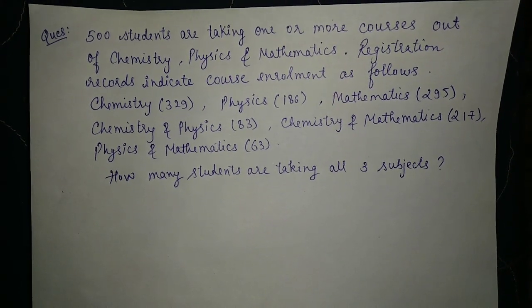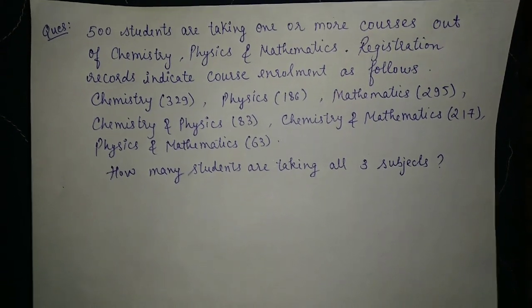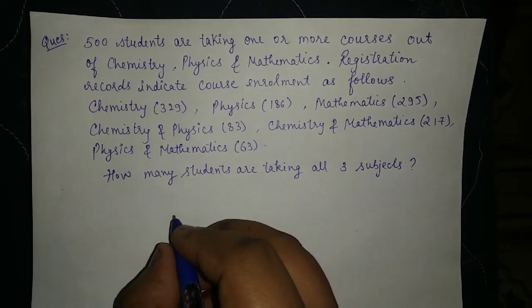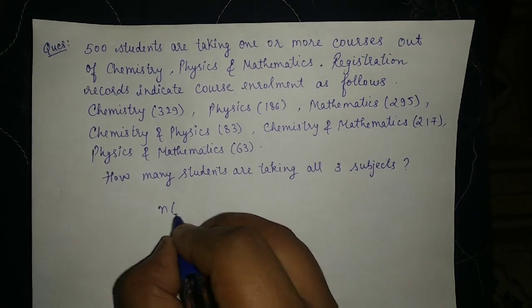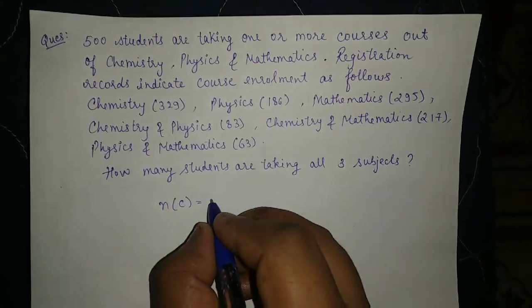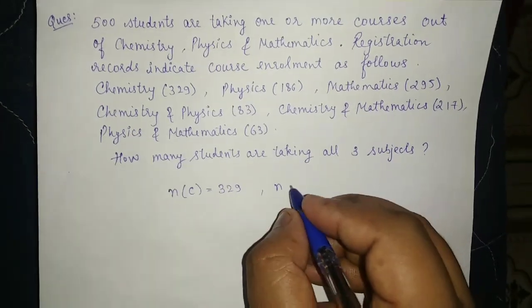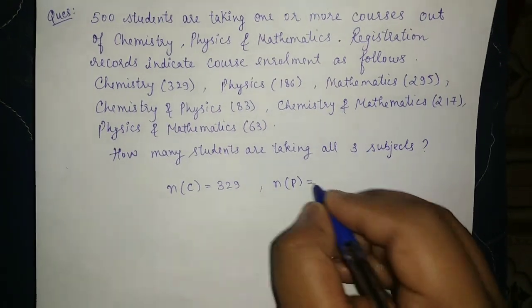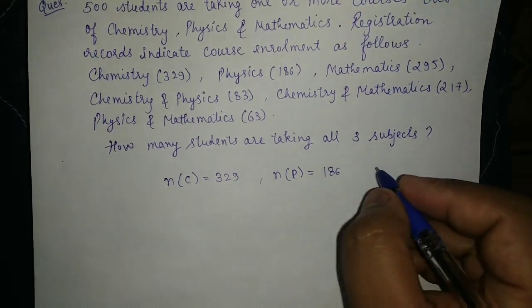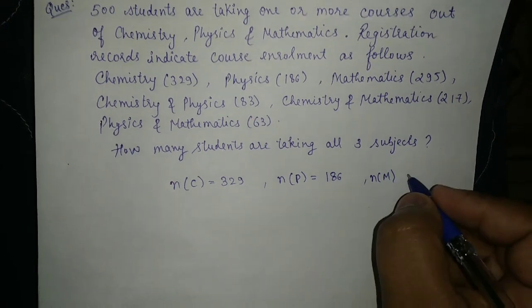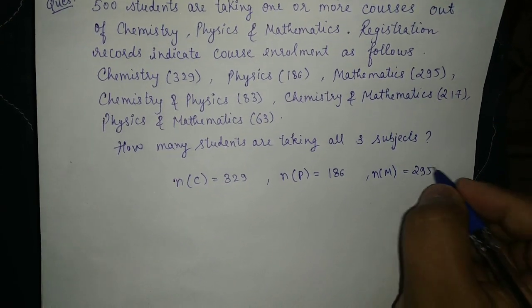Registration records indicate course enrollment as follows. The number of students taking chemistry is 329, physics is 186, mathematics is 295.